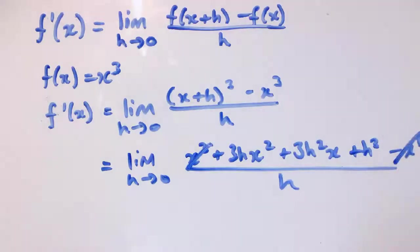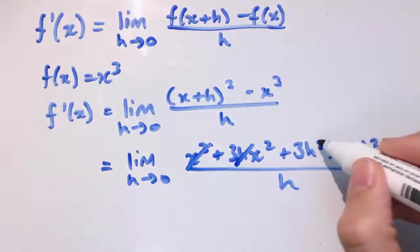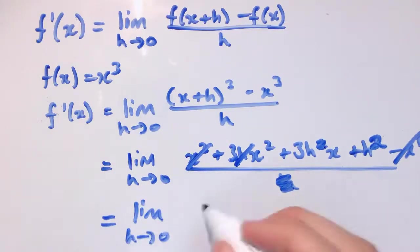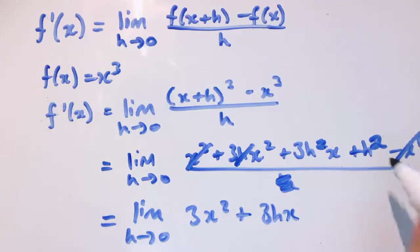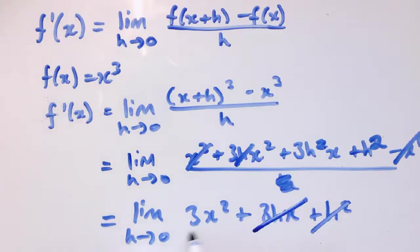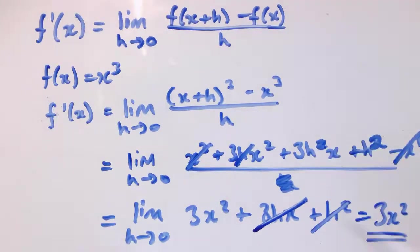The x³ terms cancel. Cancelling a factor of h from top and bottom: that h goes, the h² reduces to h, and the h³ becomes h². So what we have left is 3x² + 3hx + h². As h tends to 0, the h² term goes to 0, and the 3hx term also tends to 0 — x is treated as constant for each particular value of x as we take the limit. So we're just left with 3x². The gradient formula for x³ is indeed 3x², which proves it from first principles.